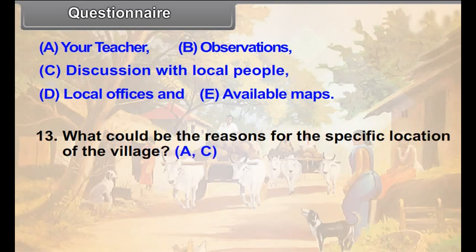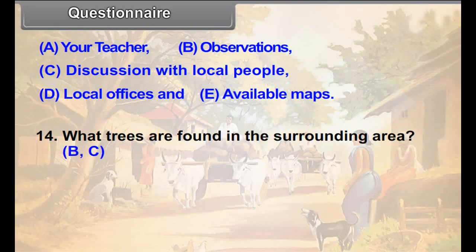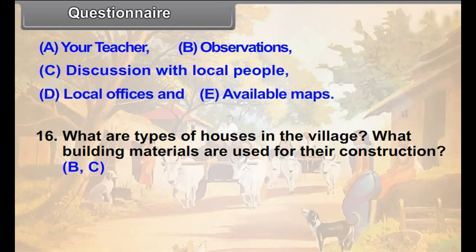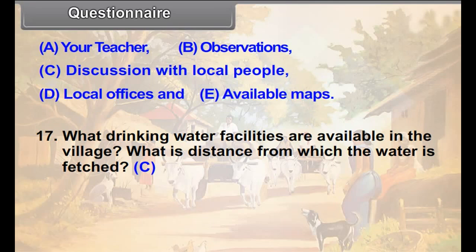Question 13: What could be the reasons for the specific location of the village? Question 14: What trees are found in the surrounding area? Question 15: What animals are there in the surrounding area? Question 16: What are the types of houses in the village? What building materials are used for their construction? Question 17: What drinking water facilities are available in the village? What is the distance from which the water is fetched?